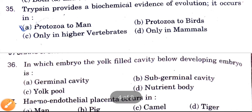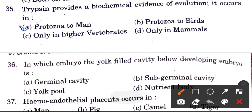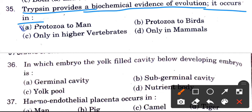Next question: Trypsin provides a biochemical evidence of evolution. It occurs in — options are protozoa to man, protozoa to bird, only in invertebrates, only in mammals. The answer is protozoa to man.